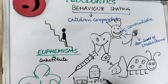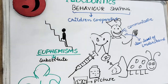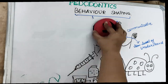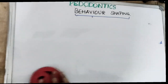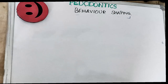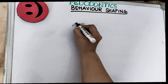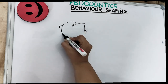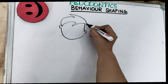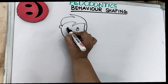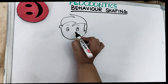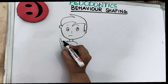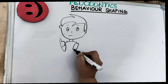Behavior shaping involves the use of reinforcers, as we have studied in the operant conditioning theory by Skinner. If you want to read about reinforcers and punishment, you can click the link in the description below and the i button. Behavior shaping uses reinforcers to change the child's behavior from inappropriate to appropriate behavior.